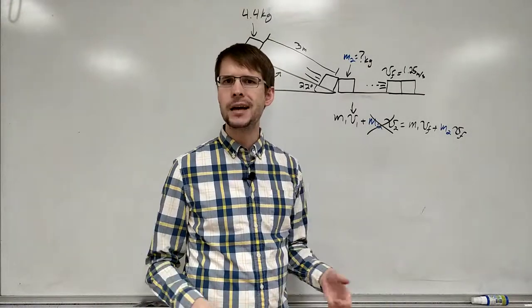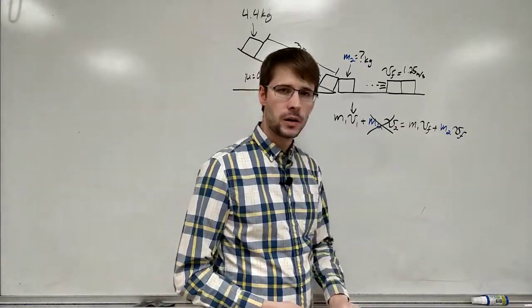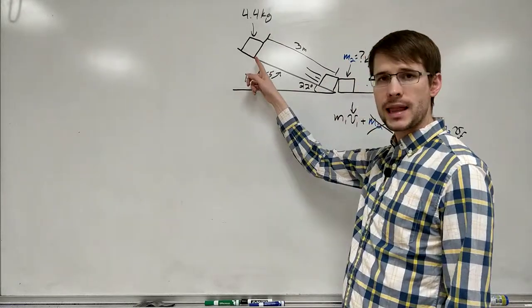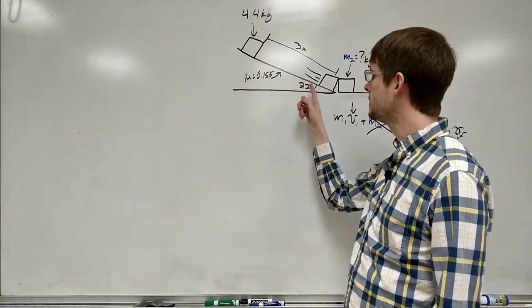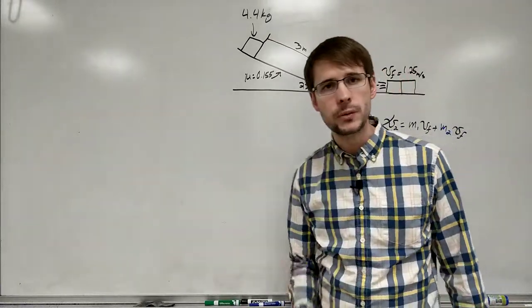The question then becomes how do we figure out this velocity? So we're going to think back to some of our previous units. We got a block sliding down a plane with a coefficient of friction. When it gets down to the bottom, it's going to be moving with some velocity.